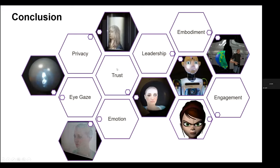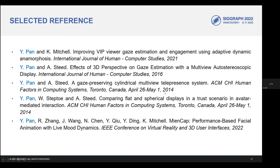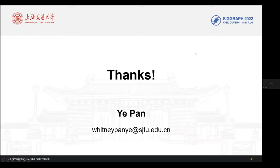In summary, the display methods we developed include the spherical display, cylindrical display, random hole display, robotic displays, and embodiment in virtual environments. We also examined human factors: embodiment, leadership, eye gaze, trust, emotion, engagement, and privacy. The anonymous feature of avatars is actually good for privacy. Thank you very much — that is my talk.